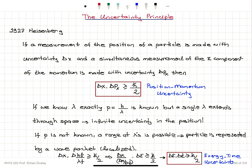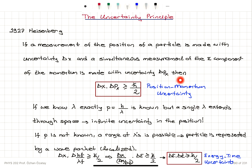The Uncertainty Principle. In 1927, Heisenberg introduced the idea of the Uncertainty Principle. It states that if a measurement of the position of a particle is made with uncertainty delta x, and a simultaneous measurement of the x component of the momentum is made with uncertainty delta px, then delta x times delta px is greater than or equal to h-bar over 2, where h-bar is Planck's constant divided by 2 pi. This is known as position-momentum uncertainty.